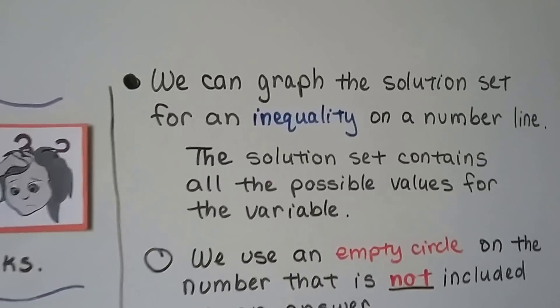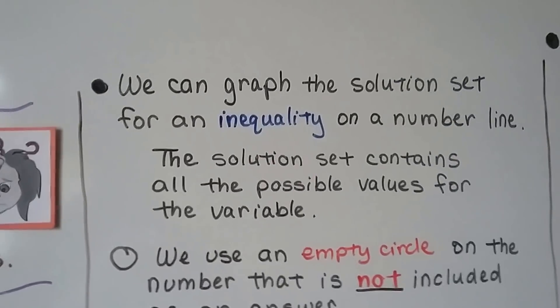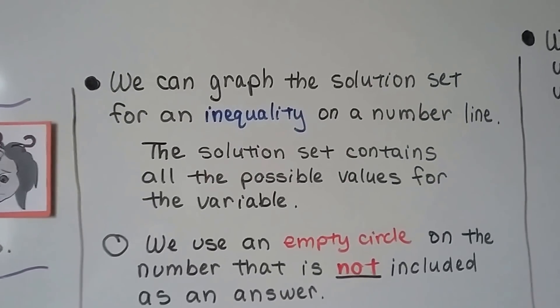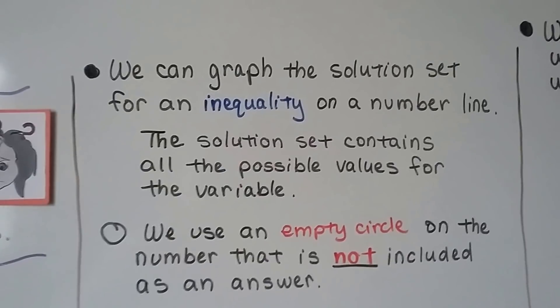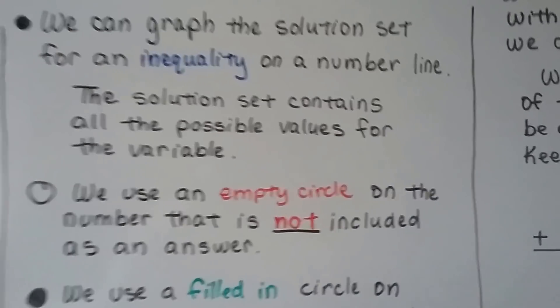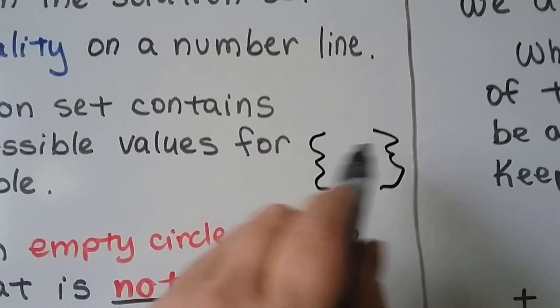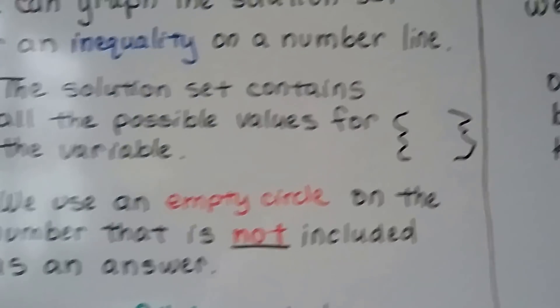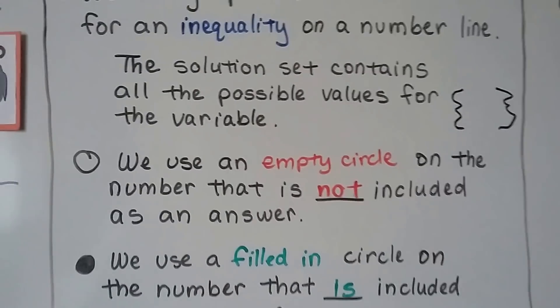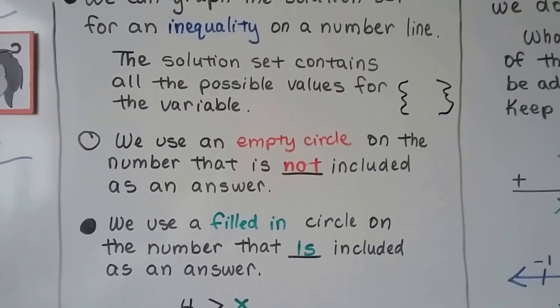And we can graph the solution set for an inequality on a number line. The solution set contains all the possible values for the variable. In algebra 1, we learn that we use the set braces to write the solution set in. We're not going to do that in this GED playlist because it's kind of skimming over everything.